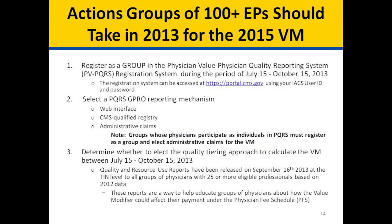Actions groups of 100 or more eligible professionals should take in 2013 for the 2015 Value Modifier. Step 1: Register as a group in the Physician Value PQRS Registration System during the period of July 15 through October 15, 2013. The registration system can be accessed at the provided link using your IACS user ID and password. Step 2: Select a PQRS GPRO reporting mechanism, which includes Web Interface, CMS Qualified Registry, or Administrative Claims. Groups whose physicians participate as individuals in PQRS must register as a group and elect administrative claims for the Value Modifier.